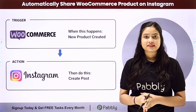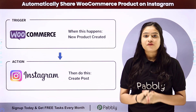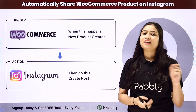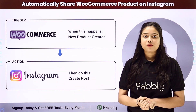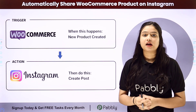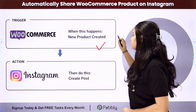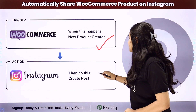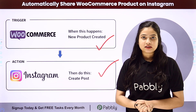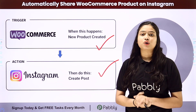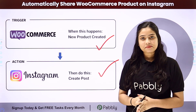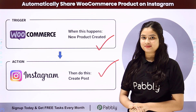So how are we going to automate this entire process? For this, we will have to integrate both these applications, and that we are going to do with the help of an amazing automation and integration software, Pabbly Connect. Now here we have WooCommerce in our trigger and Instagram in our action, so we will be connecting both of them using Pabbly Connect. To learn this entire automation step by step, let me take you all to my screen.